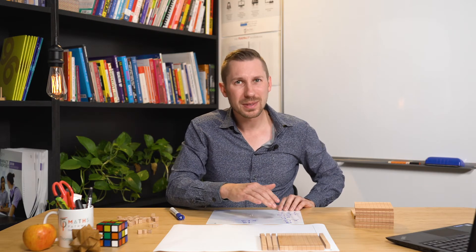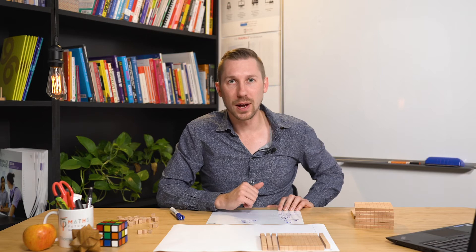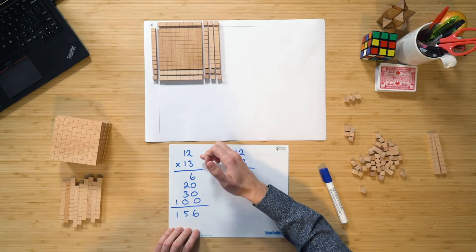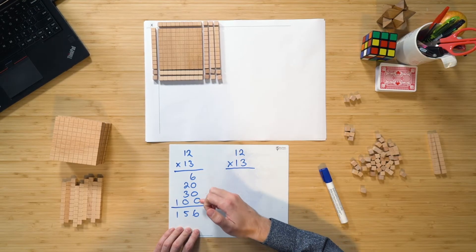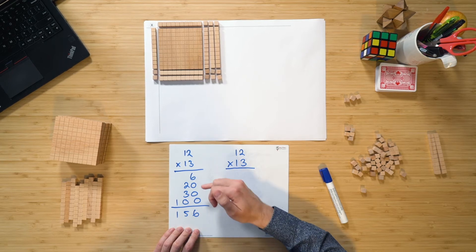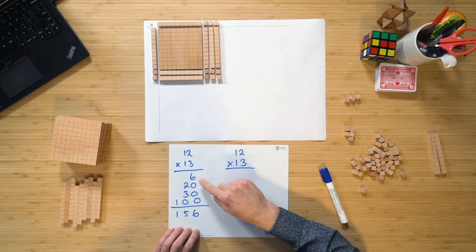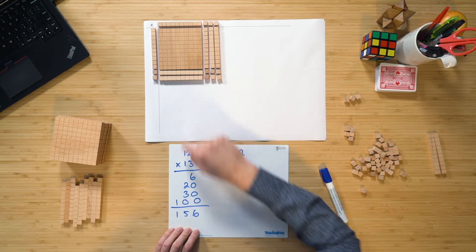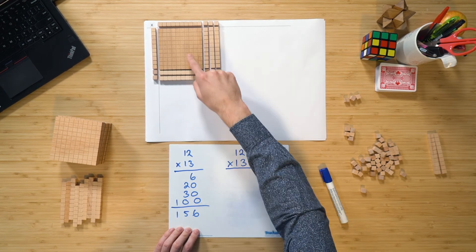When they are ready for the next step, bring them down to the abridged version of the algorithm. And that is they can see here, sort of what's going on with the place value. Because they can see how this relates to what's going on there. That is my 6, my 2 10s, my 3 10s, and my 1 100.